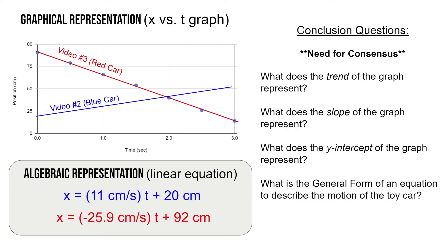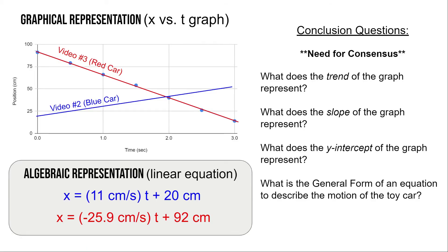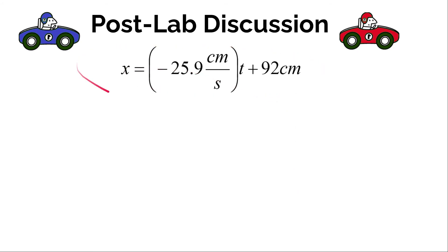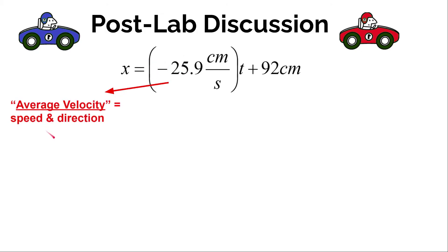Now that we know what the slope and y-intercept represent, we can answer the last question: what is the general form of an equation that describes the motion of a toy car moving at constant speed? The slope represented both the speed and the direction of the object — the value and units give the speed, and the sign represents the direction. It turns out in physics we have a word for that: an object's speed and direction is known as velocity. The y-intercept represented the initial position of the object — where it was at time zero.